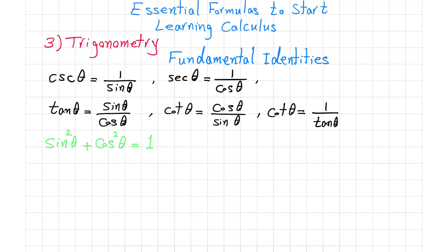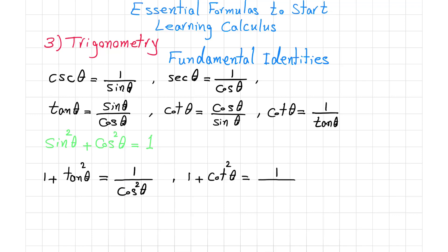We also have 1 plus tangent squared of theta equals 1 over cosine squared of theta. This one is also very important to remember. Similarly, 1 plus cotangent squared of theta equals 1 over sine squared of theta. This is also a very important identity.